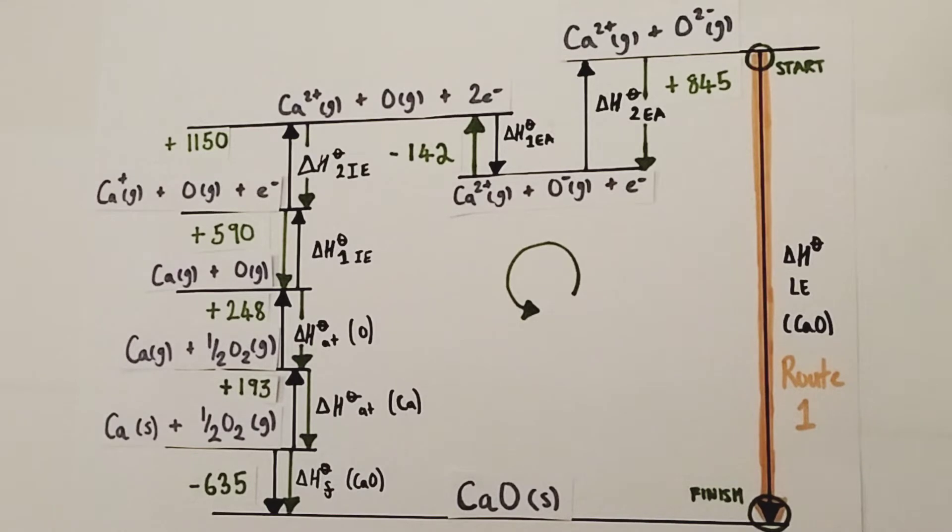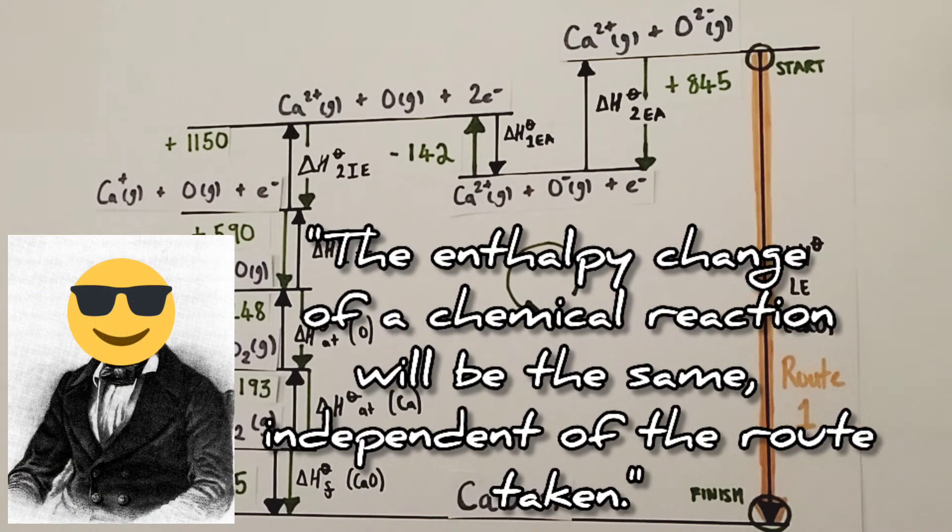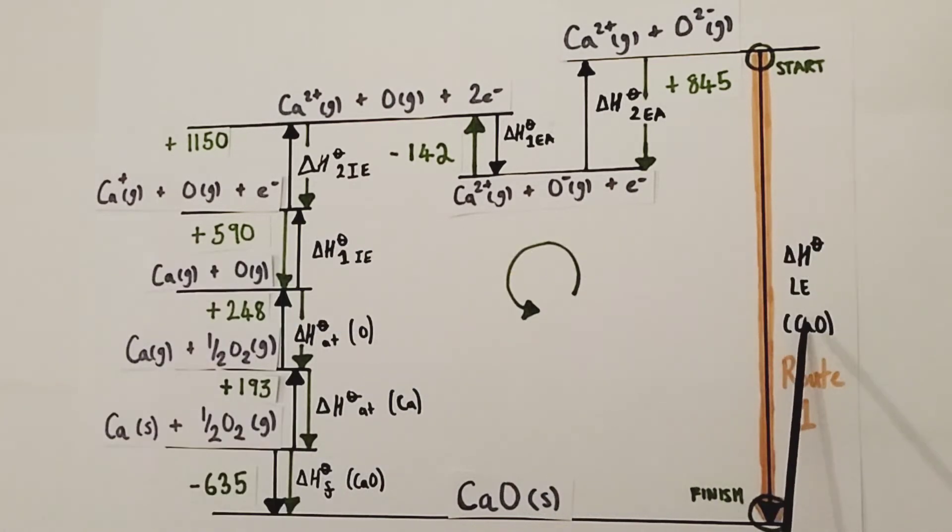I'm going to show you now how to apply Hess's law to find the missing lattice enthalpy for calcium oxide. I've put onto this Born-Haber cycle all of the enthalpy changes for the various processes, but obviously we don't have the lattice enthalpy which is missing. I'm going to show you a foolproof way of using Hess's law to find this missing value. Hess's law states that the enthalpy change of a chemical reaction will be the same, independent of the route taken.